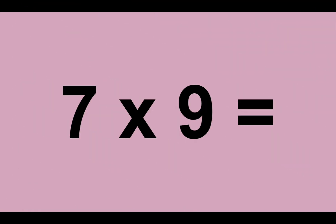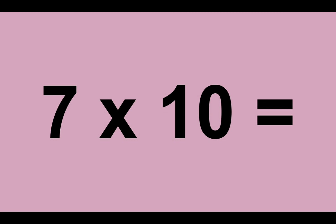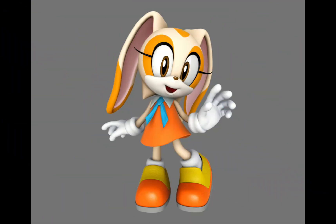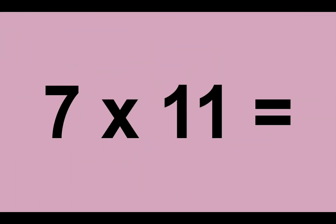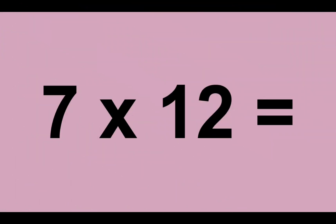Seven times nine equals sixty-three. Seven times ten equals seventy. Seven times eleven equals seventy-seven. Seven times twelve equals eighty-four.